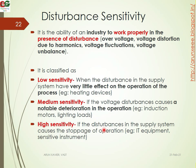High sensitivity means that if the disturbance in the supply system causes a stoppage of the operation, it is classified as high sensitivity — for example, sensitive instruments. Disturbance sensitivity is classified into three levels: low, medium, and high, based on how much the supply disturbance affects the operation.